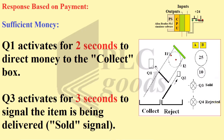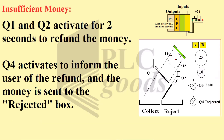Response based on payment: If sufficient money is deposited, Q1 activates for 2 seconds to direct money to the collect box, and Q3 activates for 3 seconds to signal the item is being delivered. If money is insufficient, Q1 and Q2 activate for 2 seconds to refund the money, Q4 activates to inform the user of the refund, and the money is sent to the rejected box.